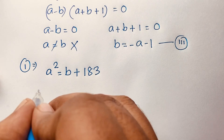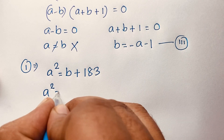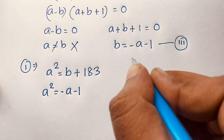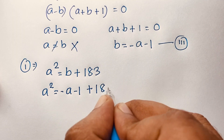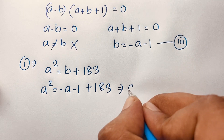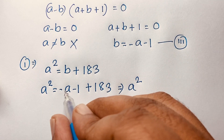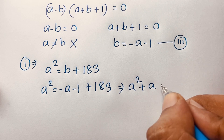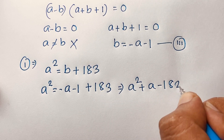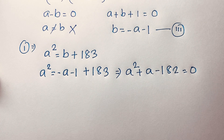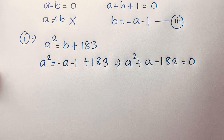Now substituting b equals minus a minus 1 into the first equation, we get a squared equals minus a minus 1 plus 183. This gives the quadratic equation a squared plus a minus 182 equals 0, since 183 minus 1 equals 182.